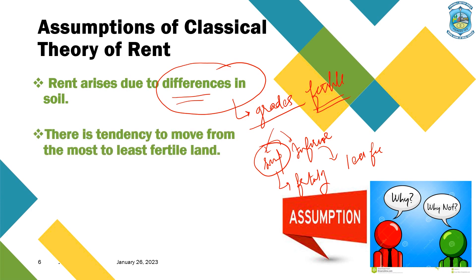The next assumption is that there is a tendency to move from the most fertile land to the least fertile land. This means we first cultivate land which has maximum fertility and can give maximum production or output, and then move to land which is less fertile.